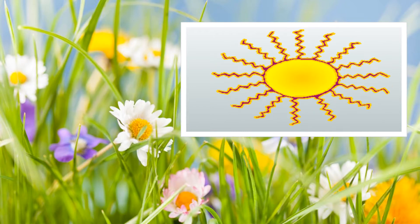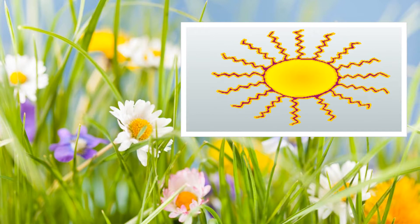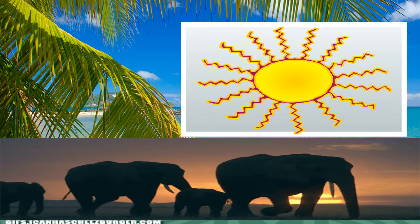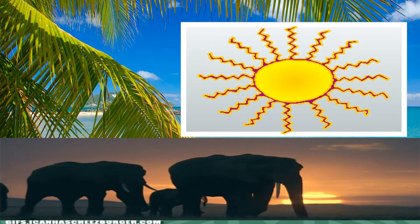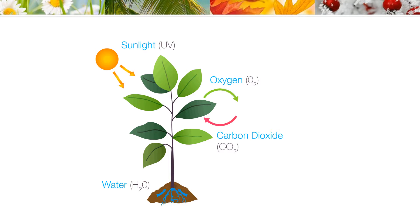The sun is very useful to plants. Like human beings and animals, plants also need sunlight. Plants use sunlight to prepare their own food by the process of photosynthesis. The process of photosynthesis occurs in green leaves in the presence of carbon dioxide, water, and sunlight.